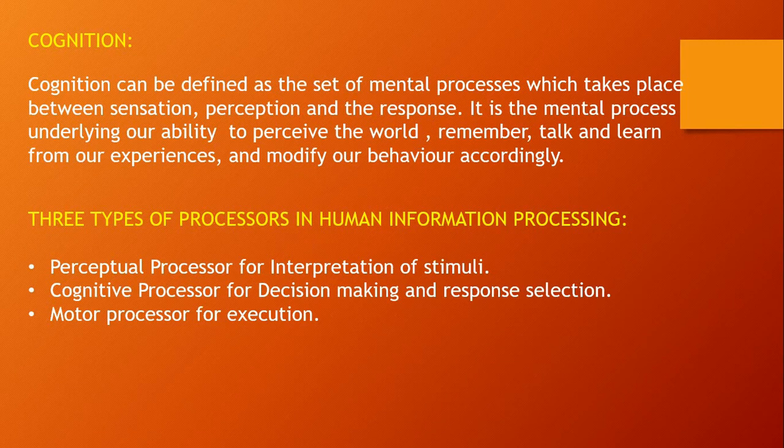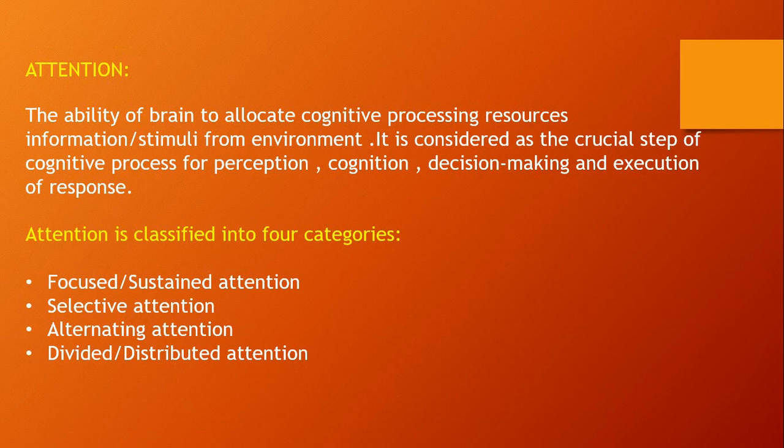The three processors involved in human information processing are: the perceptual processor, used for interpretation of stimuli from the external environment; the cognitive processor, for decision making and response selection; and the motor processor, for execution. Attention is the ability of the brain to allocate cognitive processing resources to information from the environment. It is considered a crucial step of the cognitive process for perception, cognition, decision making, and execution of response.